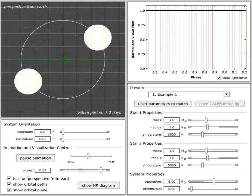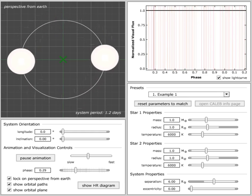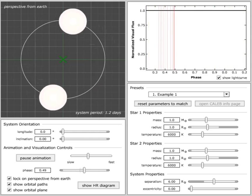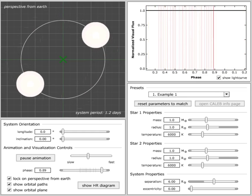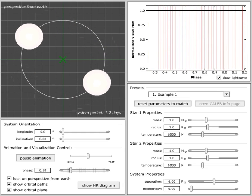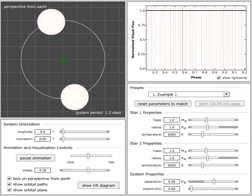Both stars are moving on the same orbit. Is that true for all binary systems? No. Well, why is it true for this system? Okay, because they have the same mass. So if they had different masses, would they have different sized orbits? Well, let's check that prediction.